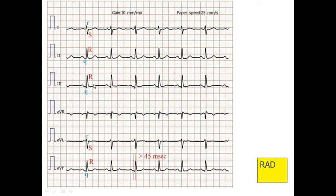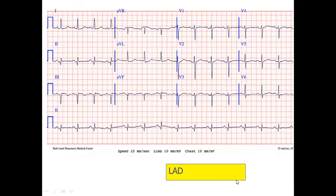Here you see the biggest R in the standard leads is on the 3rd lead. Also, on the 1st lead we have predominance of negative component, and AVF gives us predominance of positive component — this is right axis deviation.